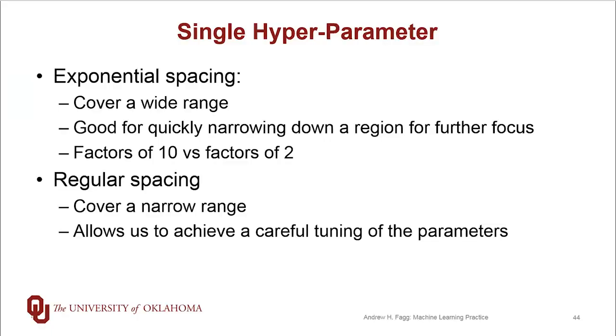This is just a summary of those points about spacing. Exponential spacing is all about covering a really wide range. This is really good for scenarios where you just have no idea what the hyperparameter should be, and it gives you an opportunity to quickly narrow down the right region of values. We tend to work in factors of 10, but as we start to narrow down parameters, you might go down to factors of two or even drop into regular spacing. Regular spacing is really much more about fine tuning your hyperparameters once you have a really good idea as to what the right region is.